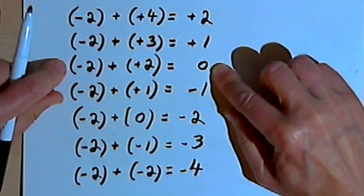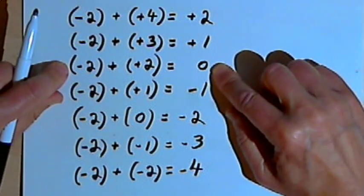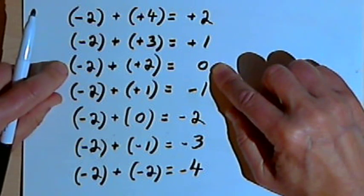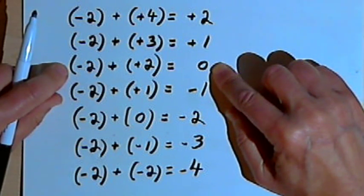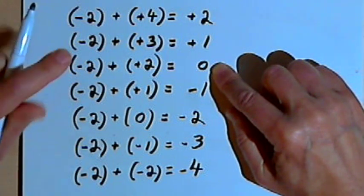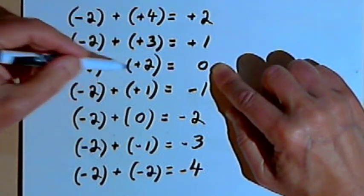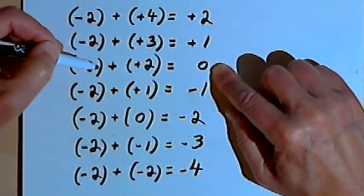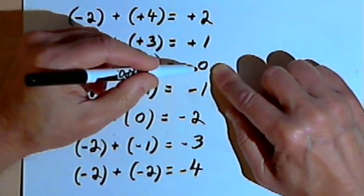Now I come to negative 2 plus positive 2. These are additive inverses — they're opposites of each other — so when I add the opposites, I get zero.